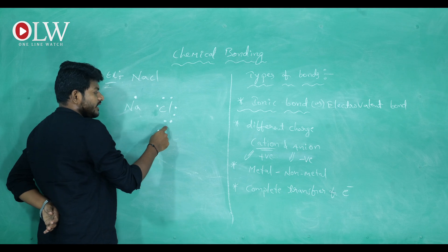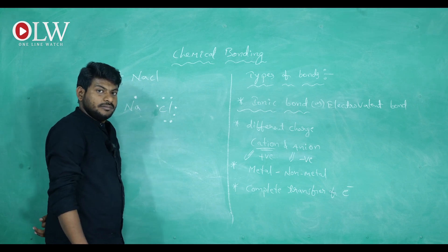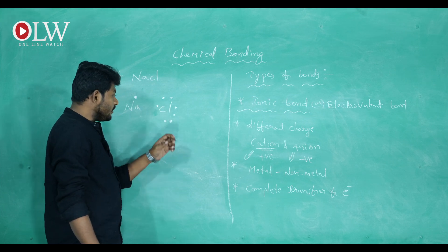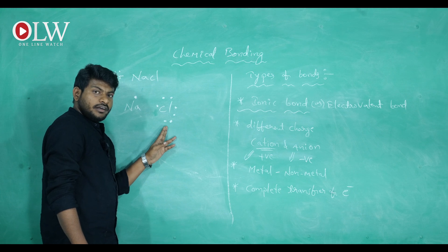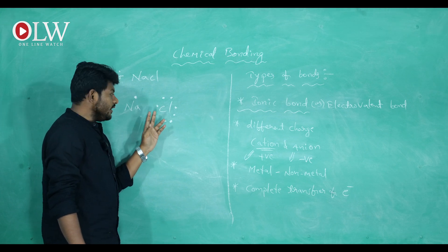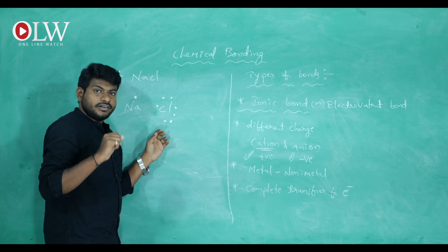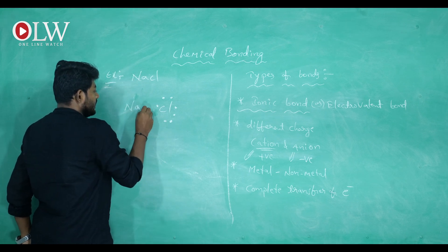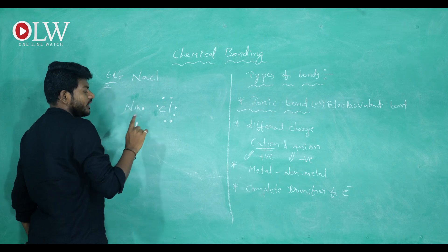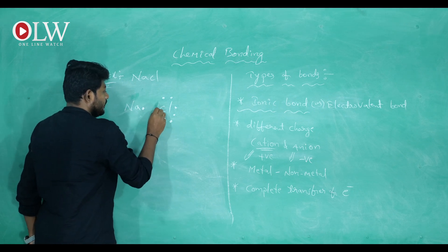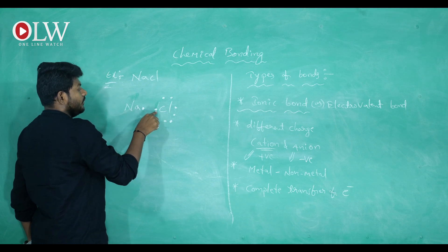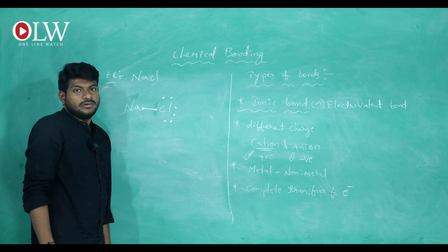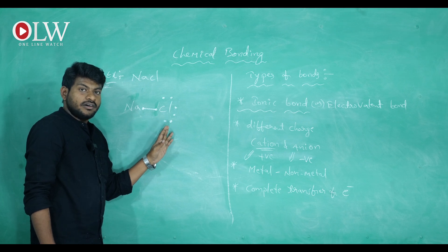Chlorine contains seven valence electrons in its outermost shell. According to the octet rule, chlorine needs one more electron. That one electron comes from sodium — I am writing the sodium valence electron here for clarity. Sodium donates one electron to chlorine. Now chlorine has eight electrons in its outermost shell — seven original plus one from sodium — satisfying the octet rule.